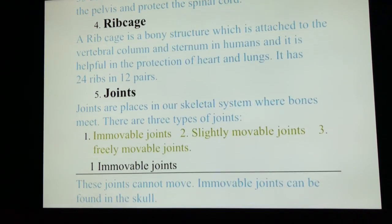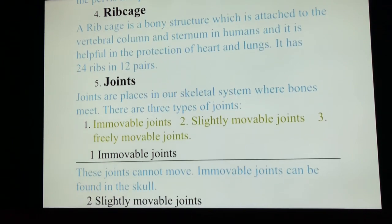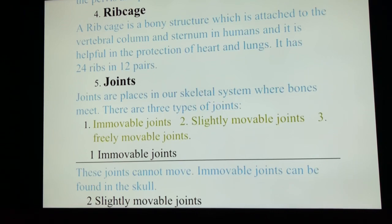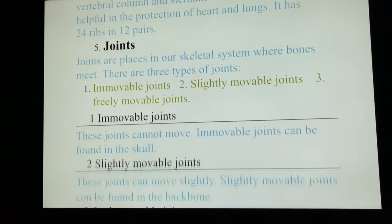As you can see, the next topic is joints. You must have heard about joints in your normal life. Joints are places in our skeletal system where bones meet. There are three types of joints: immovable, slightly movable, and freely movable.